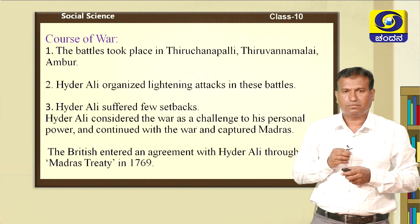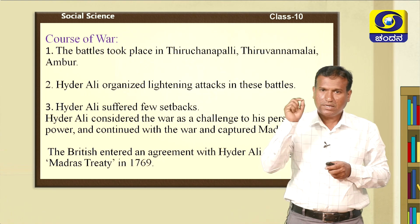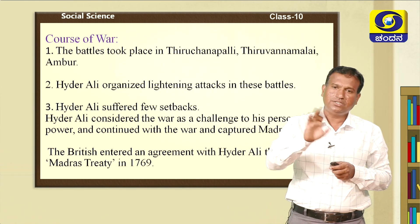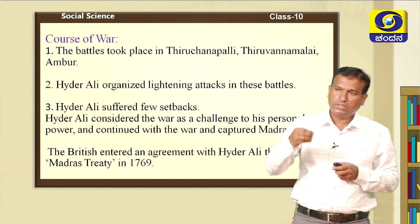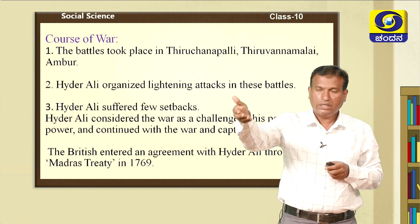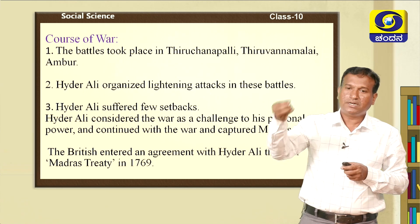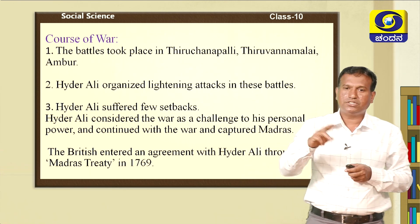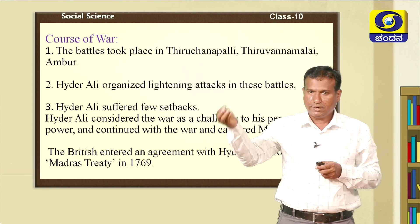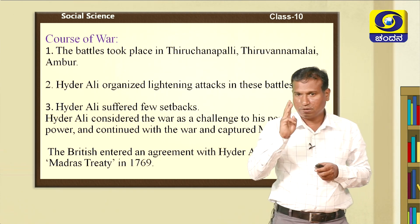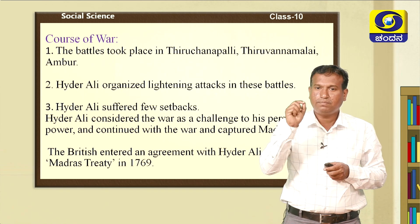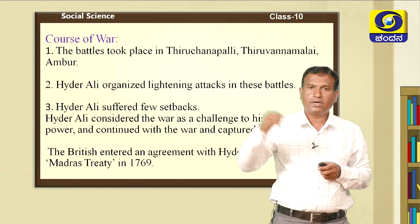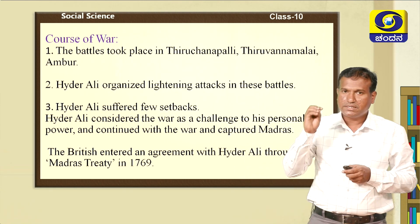What were the terms of the Treaty of Madras? There are three main terms. First, captured war prisoners had to be exchanged — if Haidrali held British soldiers, he had to send them back, and vice versa. Second, captured territories had to be exchanged with each other. Third — and most importantly — if any enemy attacked either side, they had to help each other. If any enemy attacked Haidrali, the English were supposed to help him, and if anyone attacked the English, Haidrali was supposed to help them.